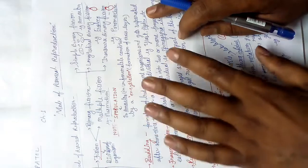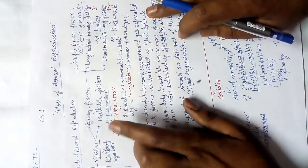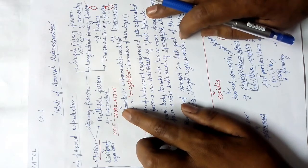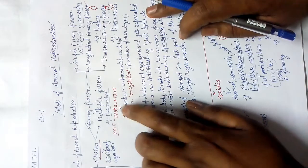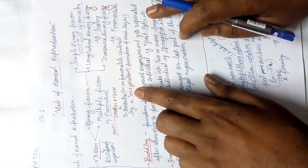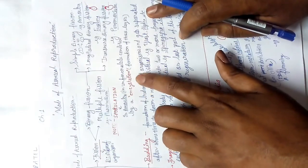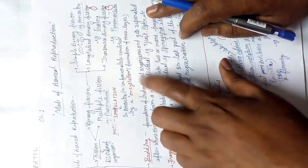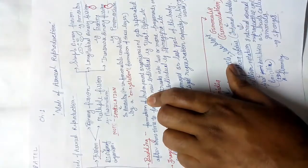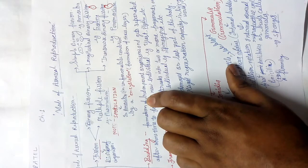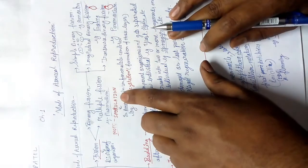Encystation is seen in Amoeba and some other organisms. In unfavorable conditions, by a process called encystation, three layers form around the Amoeba. The Amoeba keeps dividing inside the cyst, and when favorable conditions return, the cyst breaks and the Amoeba comes out and can live individually.